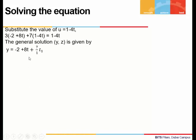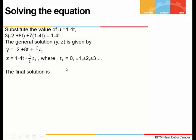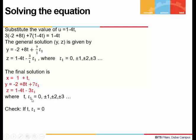The general solution becomes y = y₀ + 8t + 7t₁ = −2 + 8t + 7t₁, and z = z₀ − 4t − 3t₁ = 1 − 4t − 3t₁. The final combined solution is: x = 1 + t, y = −2 + 8t + 7t₁, and z = 1 − 4t − 3t₁, where t and t₁ can take values 0, ±1, ±2, etc.